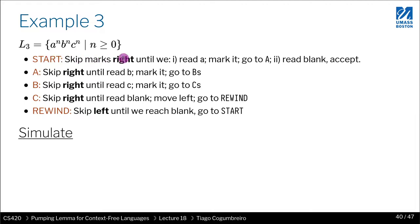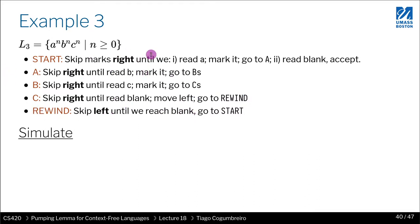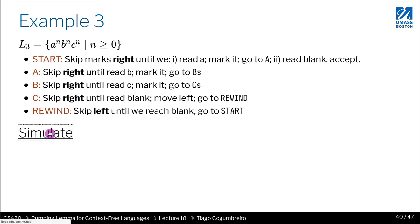In the start state, you skip until you read an A and then go to state A where you cross it out. Otherwise you read blank and you're done — even the empty string is accepted. After marking an A, you're finding B's: skip everything until you read the B, mark it, then go to state C. In state C, you skip X's to find a C, cross that out, and go to state R — rewind. In rewind, you skip everything to the left until you reach the blank, meaning you've rewound the whole string. Reaching the blank means you've reached the beginning, and you move back to start.